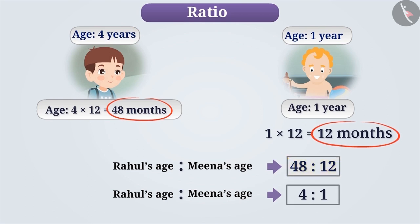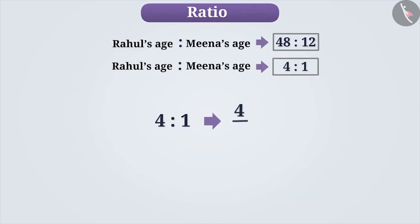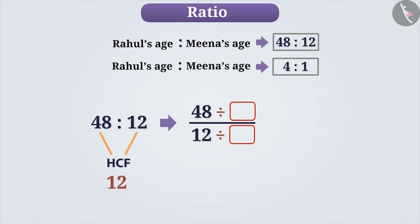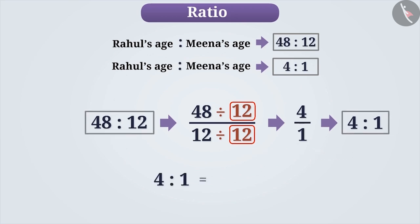We can represent any ratio in the form of a fraction and any fraction in the form of a ratio. Therefore, we can write 48 is to 12 as 48 by 12. We can get an equivalent ratio by multiplying or dividing the numerator and denominator by the same number. Since the HCF of 48 and 12 is 12, we divide both the numerator and the denominator by 12. By doing so, we get the equivalent fraction 4 by 1, which can be written in ratio form as 4 is to 1. Thus, 4 is to 1 is equal to 48 is to 12. If two ratios are equal, then we can say that they are equivalent ratios.